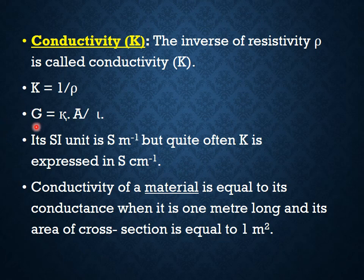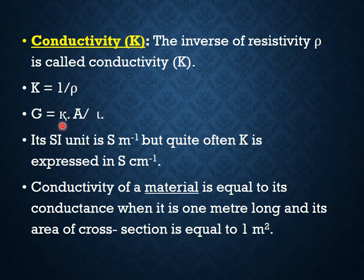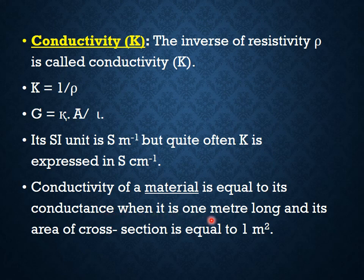Let's see the equation. G is equal to K times A by L. If the area of cross-section is equal to 1 meter square and the length of the material is equal to 1 meter, then G is equal to K — that is, conductance equals conductivity. So the definition of conductivity is: conductivity of a material is equal to its conductance when it is 1 meter long and its area of cross-section is 1 meter square.